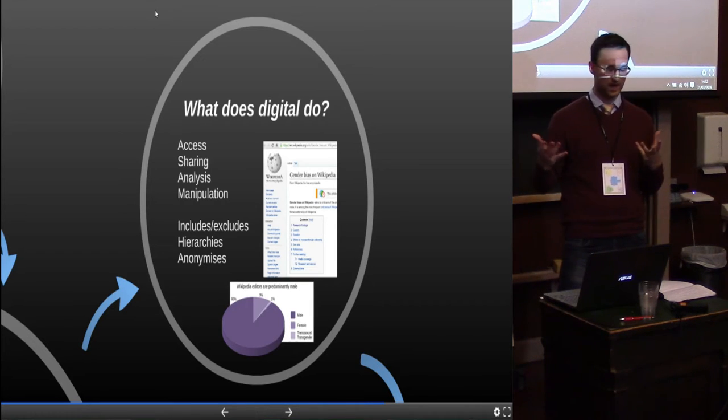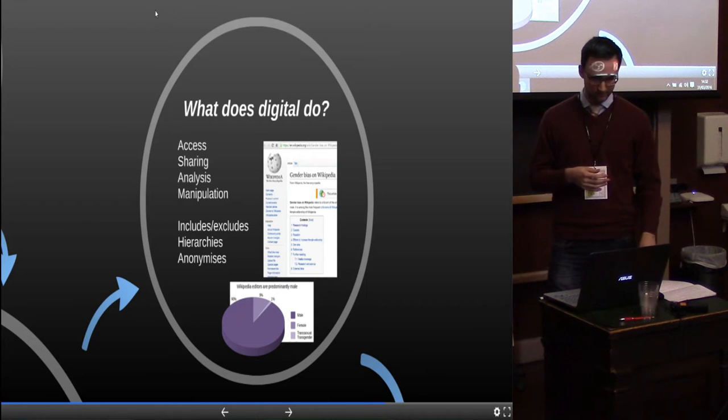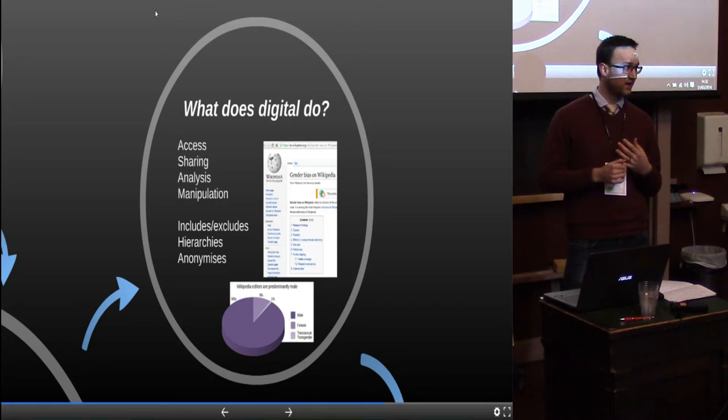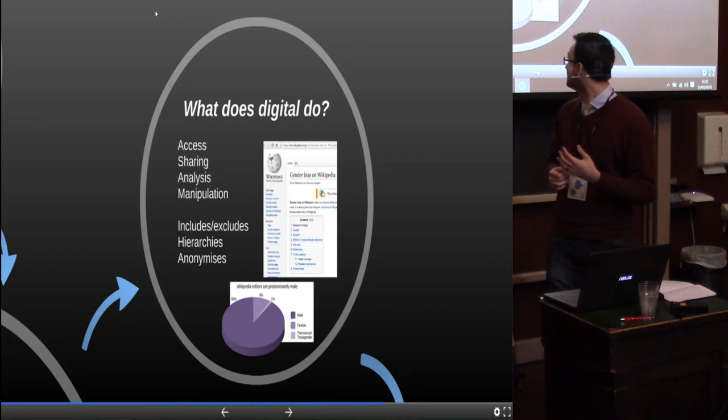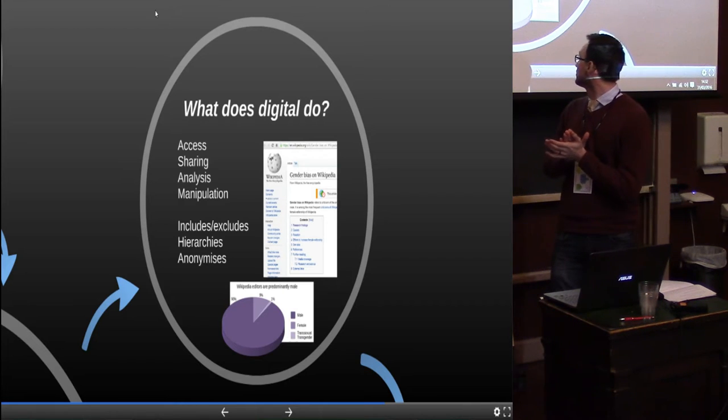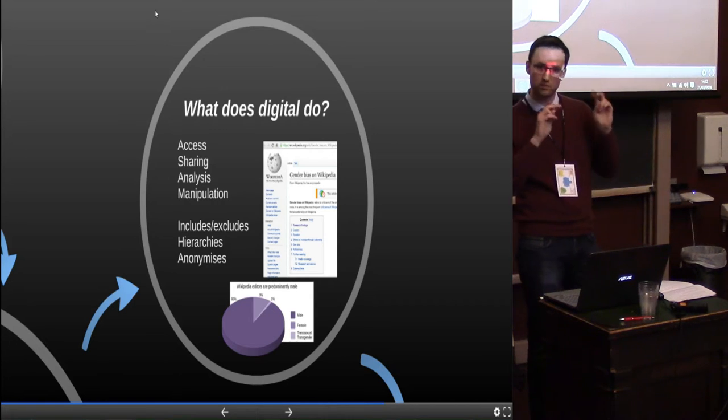The digital world can perpetuate hierarchies or create new hierarchies. You also have power online, which I think is aptly demonstrated by Wikipedia, which has its own Wikipedia page about gender bias on Wikipedia, where you can find this nice graph at the bottom, which also is showing up really badly, which has a title I love that says, Wikipedia editors are predominantly male, it says.